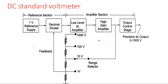This is the block diagram of DC standard voltmeter and its operation. The entire block diagram consists of three sections: reference section, amplifier section, and feedback section. In the reference section, we must consider a reference voltage because the main purpose of the DC differential voltmeter is to measure the unknown voltage by comparing with the known voltage. Here a sample reference voltage of one volt has been taken.